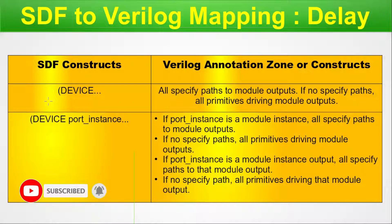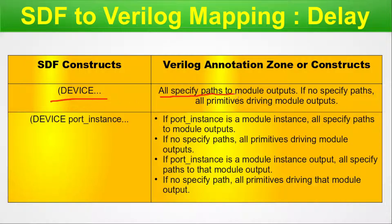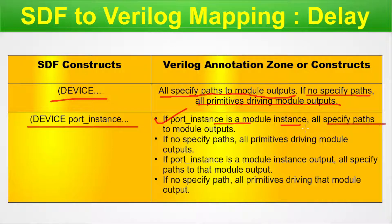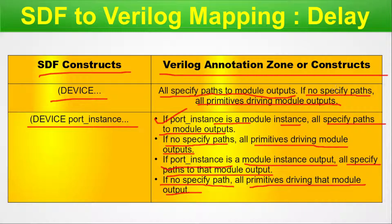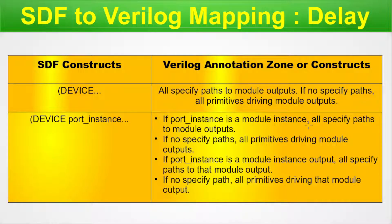Completing the delay portion of the table: DEVICE annotates all specify paths to the module outputs; if no specify paths exist, it covers all primitives driving the module outputs. If a port instance is a module instance, it maps all specify paths to module outputs; if no specify paths, it covers all primitives driving those outputs. If the port instance is a module output, it maps all specify paths to that output. This completes the SDF-to-Verilog mapping for delay components.